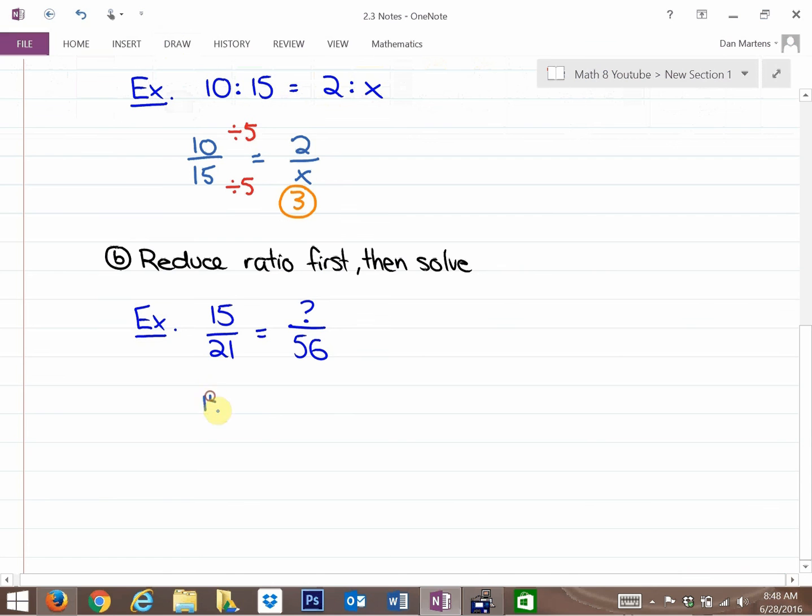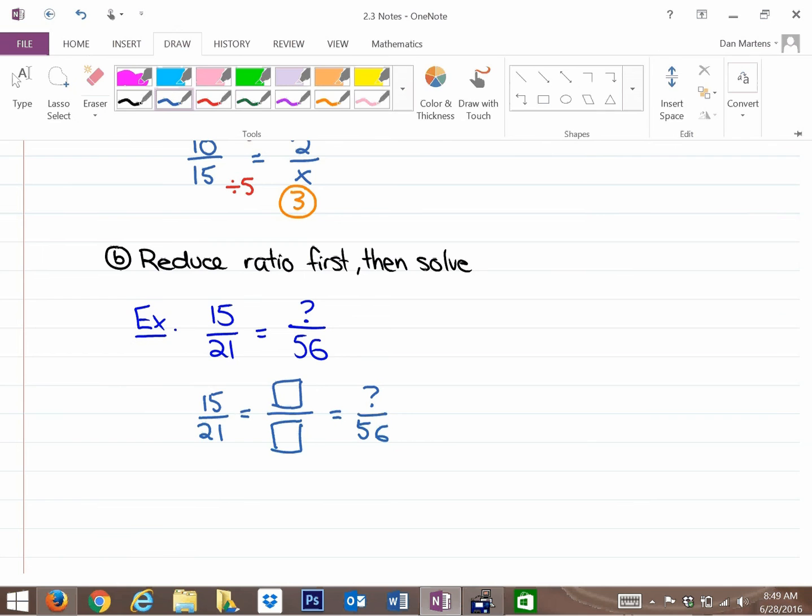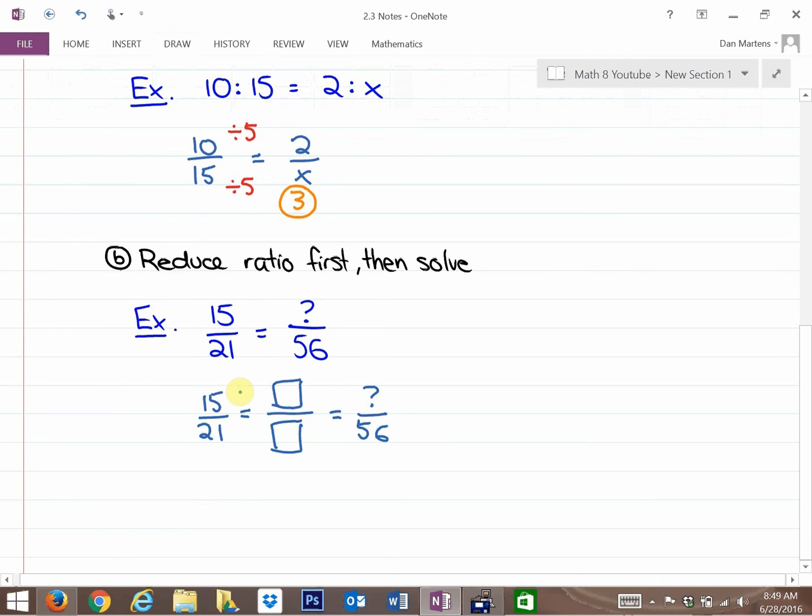So what we're going to do, I'm just going to rewrite this here. But we create a middle step where we reduce, as you can see, it says reduce the ratio first, and then solve. So if I was asking you to reduce fifteen over twenty-one, so we're going to make this an equivalent ratio in lower terms, you're going to notice how that's helpful in just a second. So both of these can be divided by three. So a proportion that's equivalent to fifteen over twenty-one is five over seven.